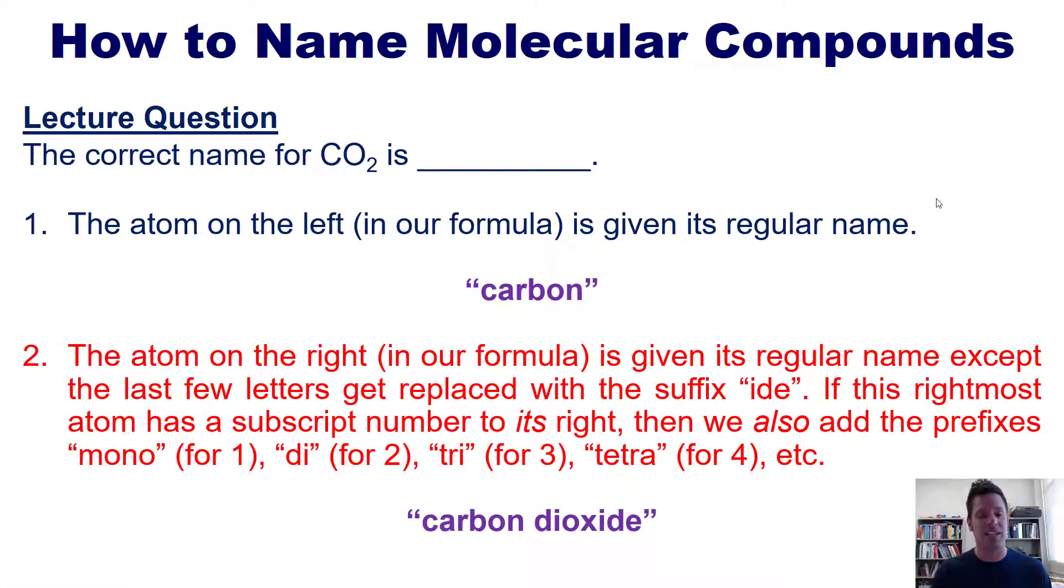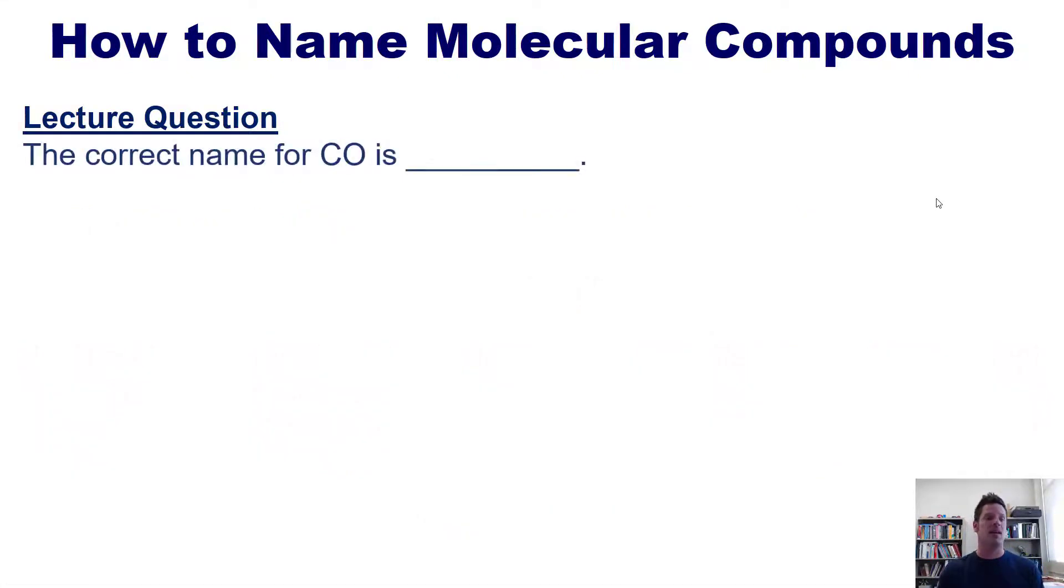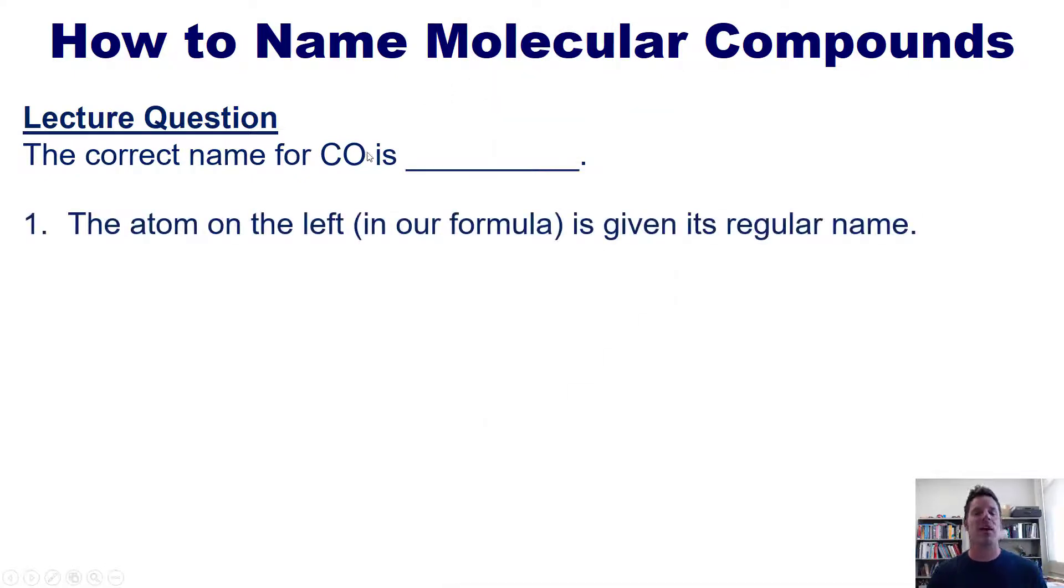Let's test your mastery further by taking a look at this example. What is the correct name for this compound CO? We'll follow the exact same rules. We write down the name for the element on the left in our formula, which is of course carbon.